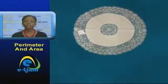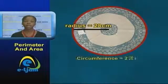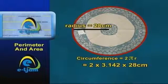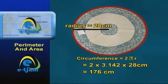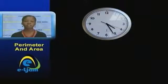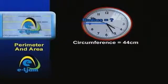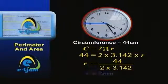If a circular tablecloth has a radius of 28 centimeters, what is the total length around it? Since its radius is 28 centimeters, then its circumference would be approximately 176 centimeters. And if the face of a circular clock has a circumference of 44 centimeters, what is its radius? This would be 7 centimeters.